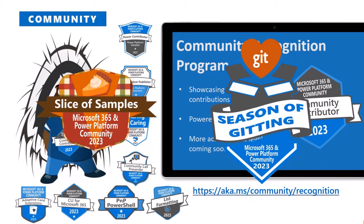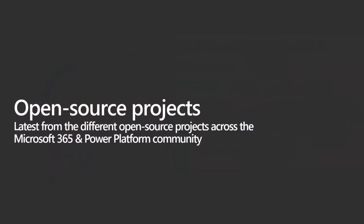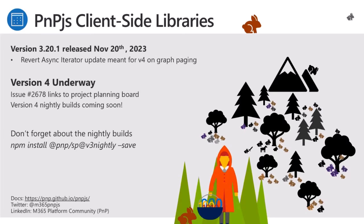Let's get into our open source projects, starting with PnP.js. Julie is here. The release on November 20th for v3.20.1 was to revert a bug — an async iterator meant for v4 ended up accidentally on v3 and broke graph paging. Beau fixed that. Otherwise we're deep in v4 work, so keep your eye on the v4 branch. There's a pinned issue so you can see the plans. That's all for today.